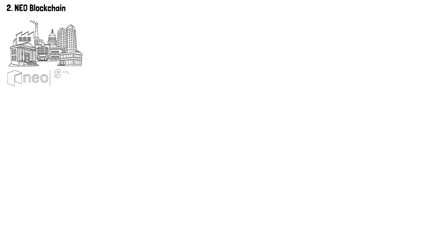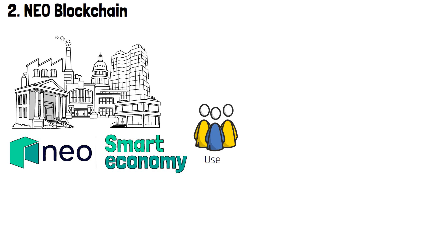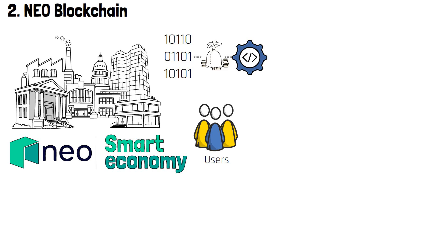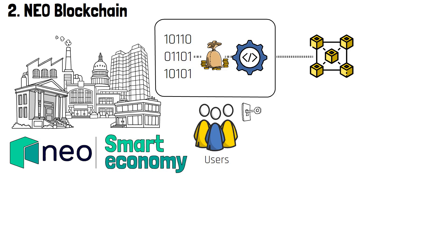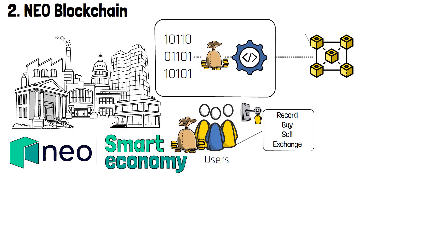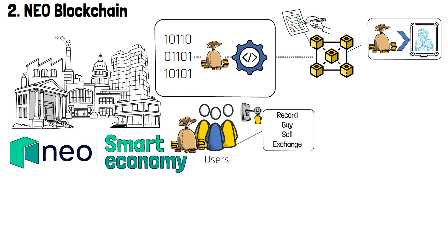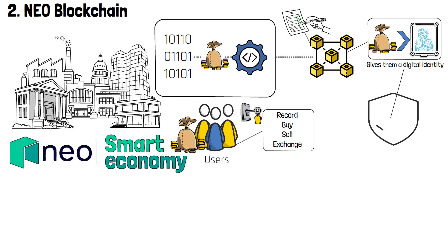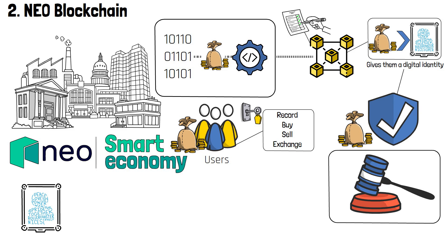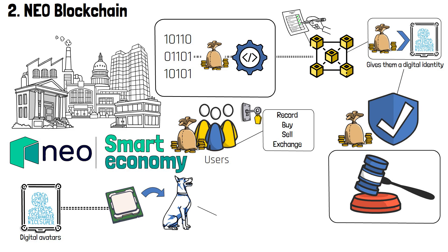When it comes to the NEO smart economy, the platform allows users to digitize and automate the management of their assets on the blockchain. This functionality opens the door for users to record, buy, sell, or exchange any assets that they own. What is particularly interesting is that when registered on the blockchain, the assets receive a unique avatar that represents them in the blockchain ecosystem and gives them a digital identity. This identity helps the platform protect all assets by the law. Moreover, these digital avatars also function together with microchip implants for animals, and can help verify or find key information about digital asset owners.